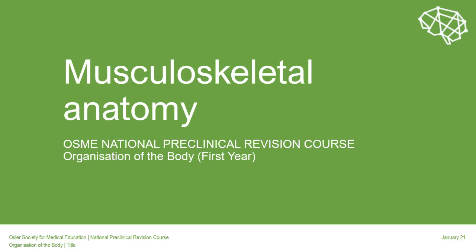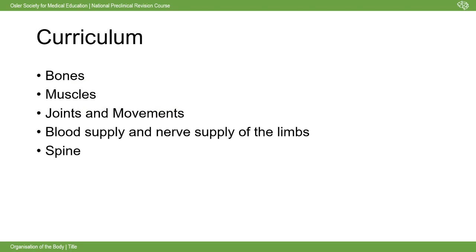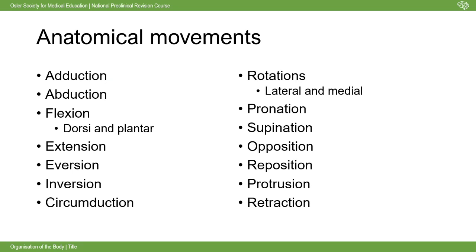Welcome everyone to musculoskeletal anatomy 101. In the Oxford curriculum you need to learn about bones, muscles, how they all join together, and how they stay alive - the blood supply and nerve supply of the limbs. We're also going to look at the spine today. You first need to really understand the movements and function of these parts of the body.